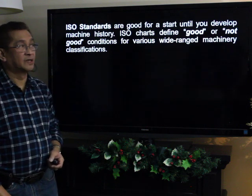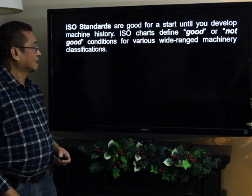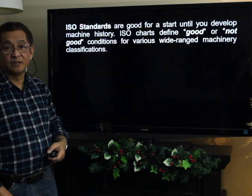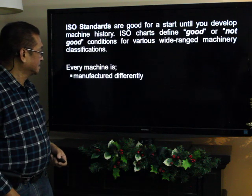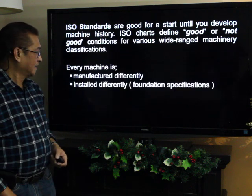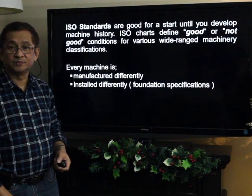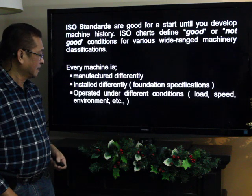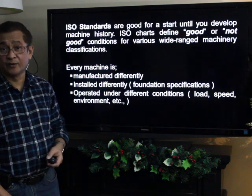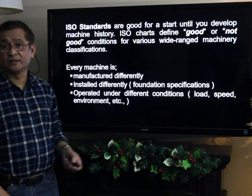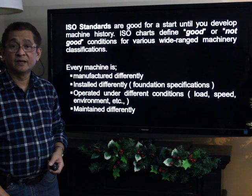ISO standards are good for a start until you develop machine history. ISO standards define good or not-good conditions for various wide-range machinery classifications, which will be discussed in succeeding video tutorials. Each machine is manufactured differently, installed differently with different foundation specifications, and operated under different conditions — different loadings, speeds, environments, corrosive or non-corrosive, hazardous or non-hazardous, or 24-hour service — and they are also maintained differently.